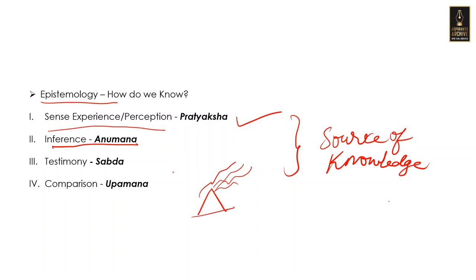Now you wonder under what conditions you can believe the verbal or written testimony of somebody else. The conditions under which testimony can be valid — we will see this in this course. The next epistemological source is comparison, called Upamana in Sanskrit. This is self-explanatory: you compare two things and then make a statement. You will also see whether this is a valid source of knowledge.